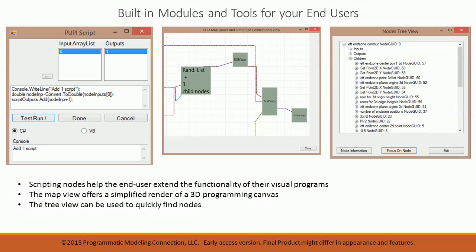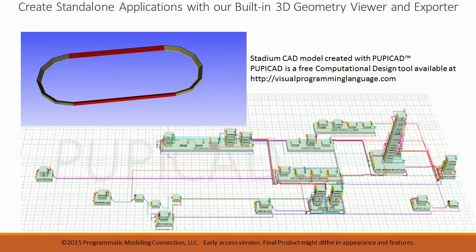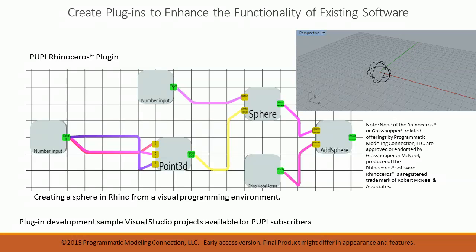Puppy is the free stand-alone parametric geometry generator created with the PAPI library. Puppy has a CAD Viewer component with geometry export capabilities as well as CAD-specific visual programming modules. Puppy can also be used to create graphical programming interfaces embedded in other software — we demonstrated a Rhinoceros plugin where the visual programming nodes were created automatically from the Rhinoceros API.